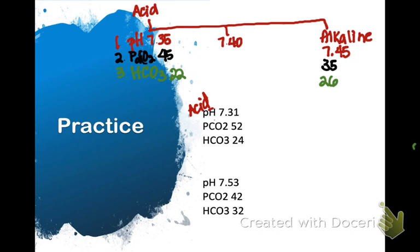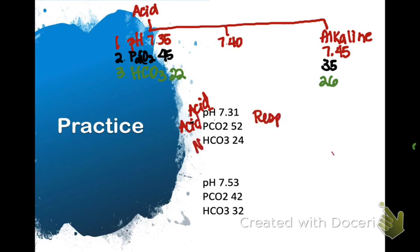Practice example: pH is 7.31 — that's acidic. pCO2 is 52, which is greater than 45, so it's acidic. Bicarb is 24, which is normal — within 22 to 26. So I have acid and acid, with a normal bicarb. The blood state is acidic, the respiratory component is acidic, and my bicarb is normal — so this is respiratory acidosis.